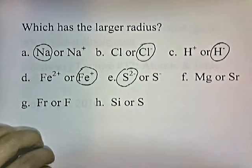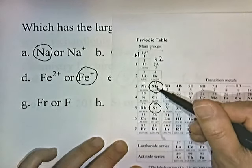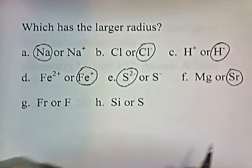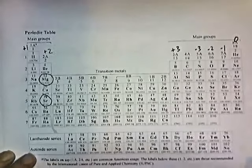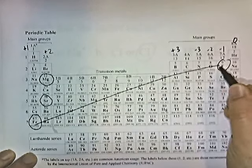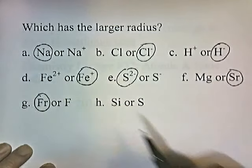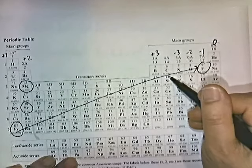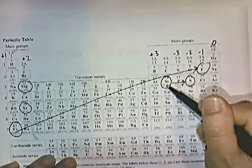Magnesium or strontium? Looking at the periodic chart, magnesium is here and strontium is below it. As you go down the periodic chart, radius increases, so strontium is the larger one. Francium or fluorine? Francium is at the bottom left and fluorine is at the upper right — as you go from the bottom left to the upper right, radius decreases, so Francium is larger. Silicon or sulfur? Silicon is to the left of sulfur on the chart, and as you go from left to right, radius gets smaller — so silicon has the larger radius.